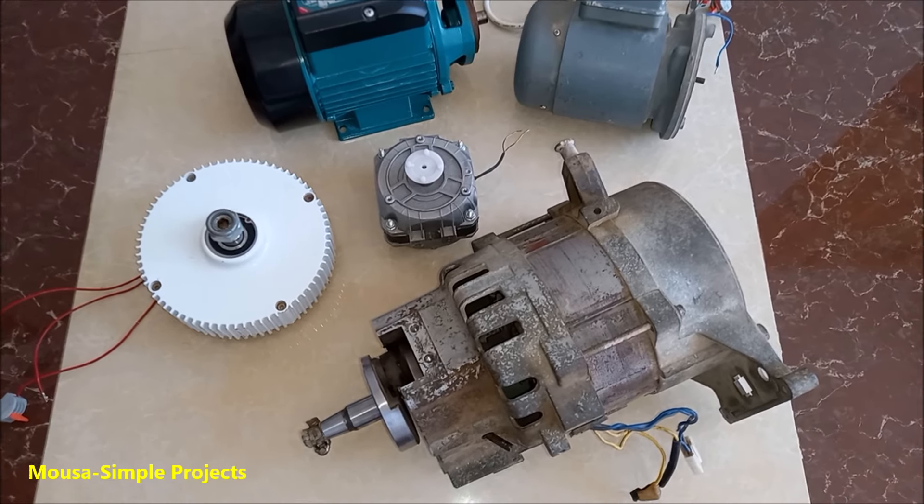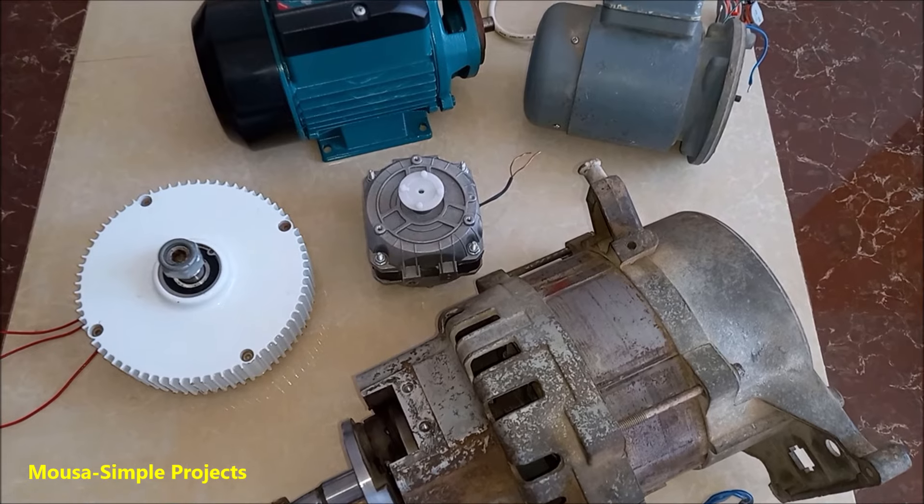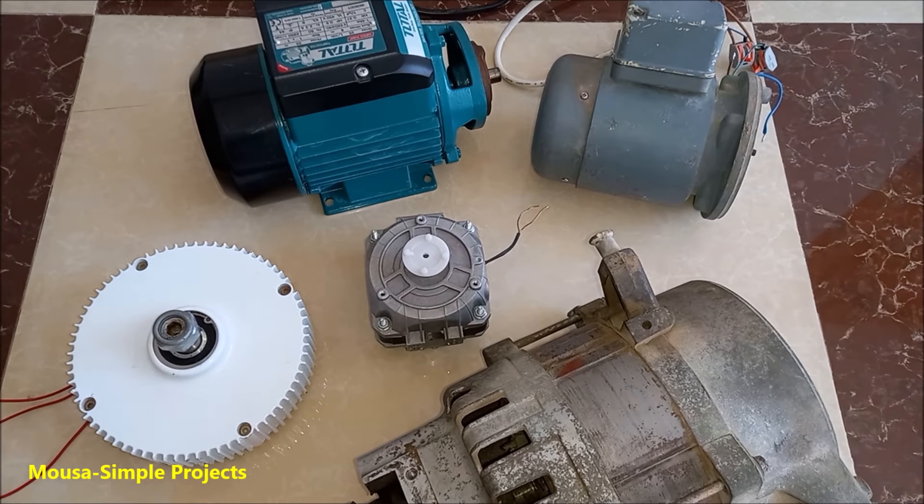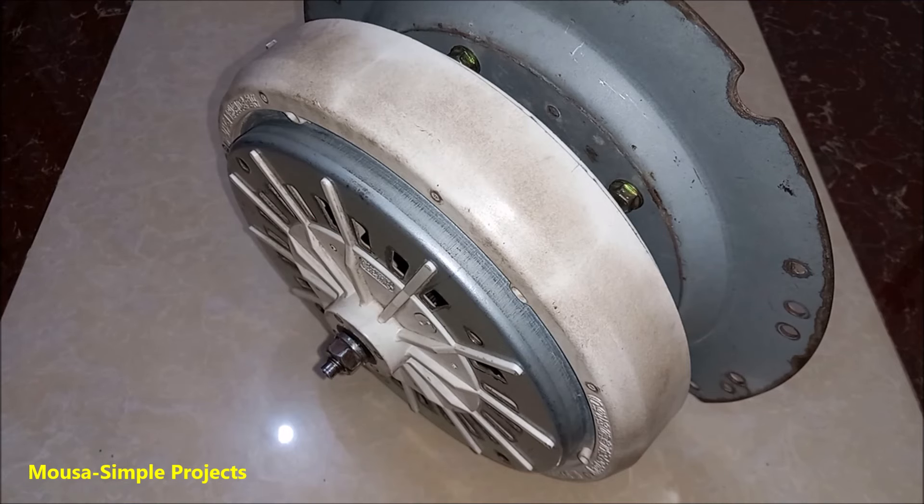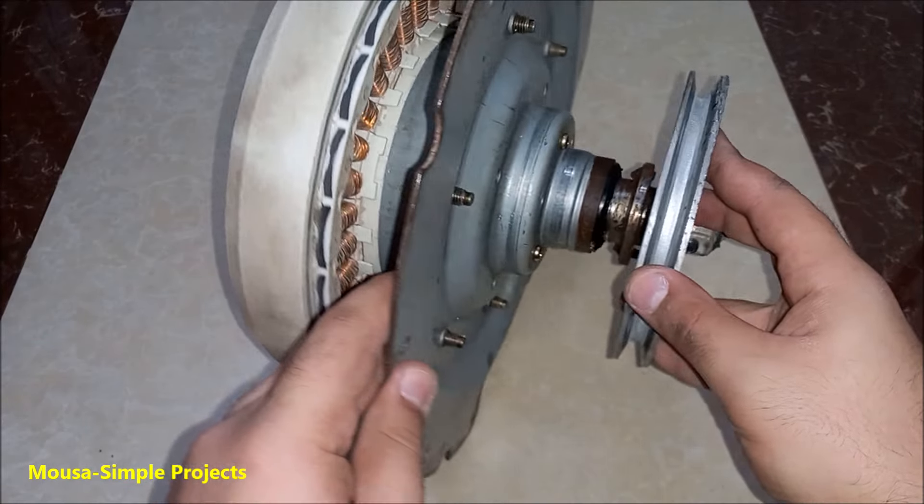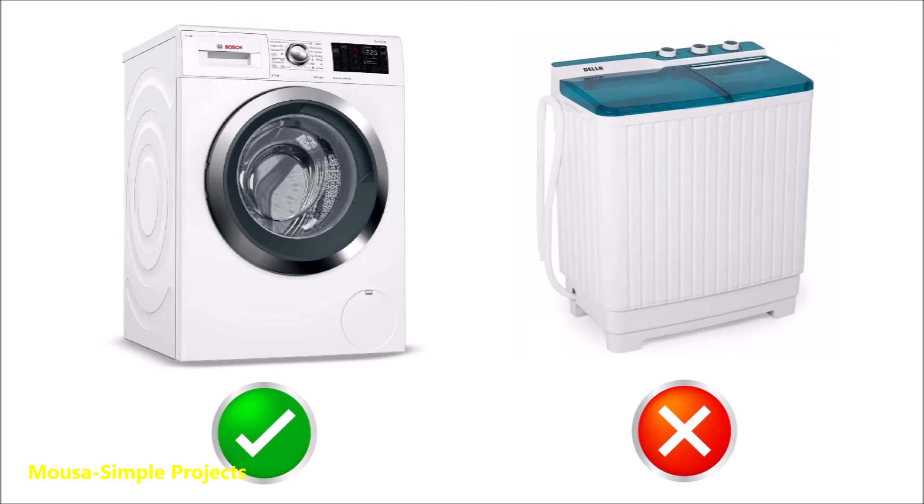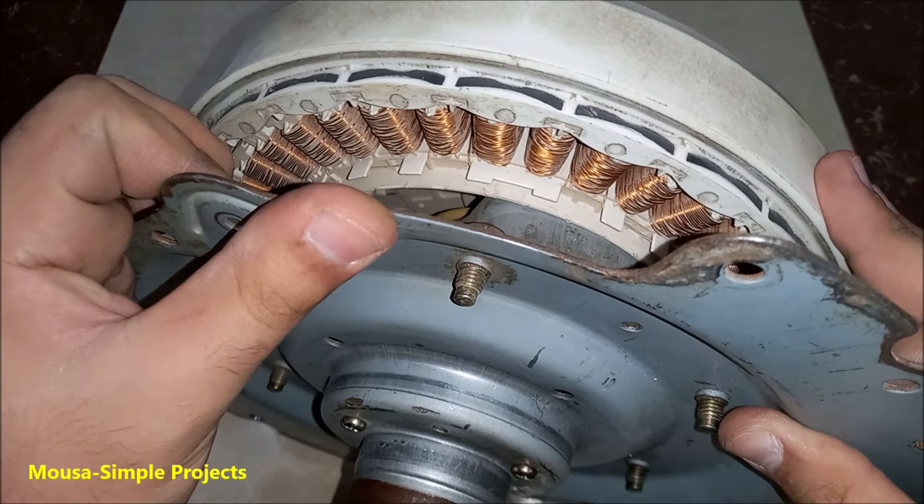Now we need a motor to use as a generator. Here I have different motors. Most of them need to rotate with very high RPM to produce electricity except this one, which is the motor of a washing machine. I bought it for $33 but maybe you can find it for free in the trash. I'm talking about the motor of automatic or inverter washing machines, not the motors of old washing machines which are useless. It is a BLDC motor and it has permanent magnets inside.